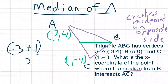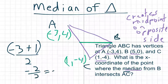There are two numbers, so I divide it by 2. So that would be negative 2 over 2, which is negative 1.